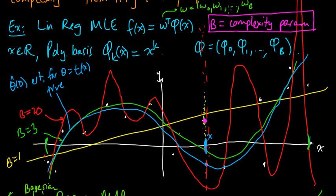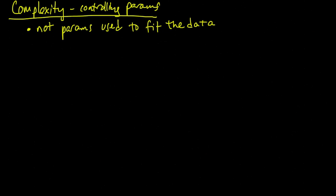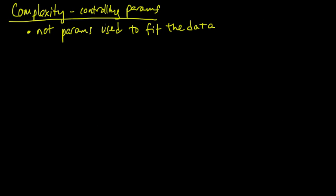And furthermore, B was not really affecting the fit to this particular data. So a complexity controlling parameter, one way that you can think about them is that they're not used to fit the data.